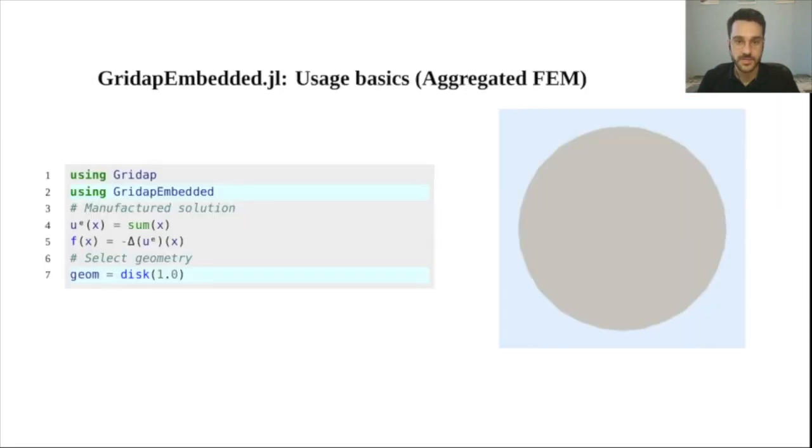As with GridApp, the user can express a GridApp embedded simulation in a very compact way. Let's see how to do it in a Poisson problem defined in an embedded disk. We will only focus on the particularities of embedded simulations. The first thing to do is to define the embedded geometry.